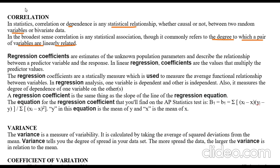First, what is correlation? Correlation is a statistical relationship. It refers to the degree to which a pair of variables are related. Correlation states about the relationship between two variables.